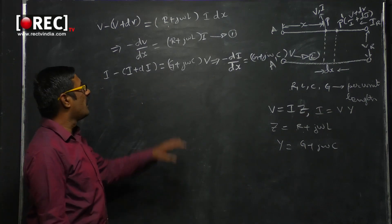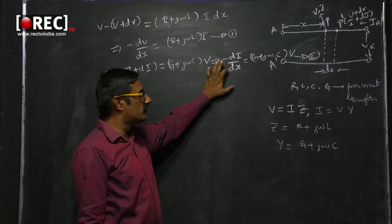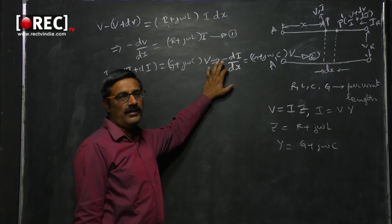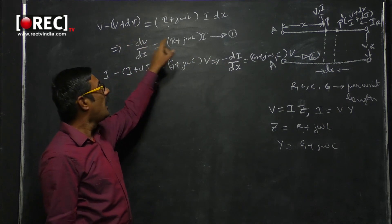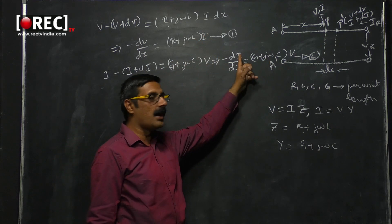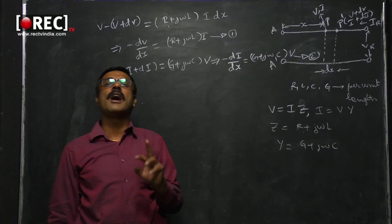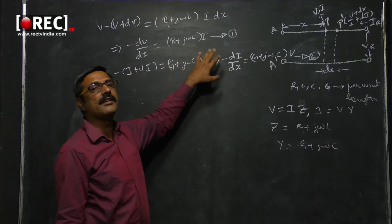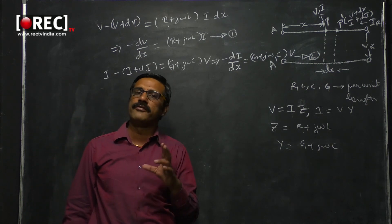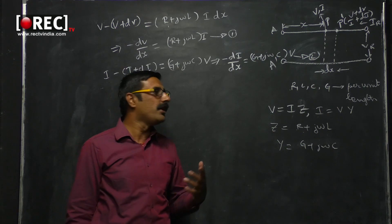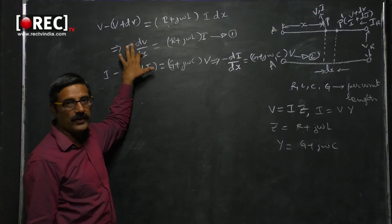Observing equations one and two: equation one is a first-order linear differential equation in V, and equation two is a linear differential equation in I. However, to solve for V we need to know I, and to solve for I we need to know V — they are two equations in two interdependent unknowns. We need to manipulate these to reduce to one variable. Differentiating equation one with respect to x gives d²V/dx² on the left-hand side.